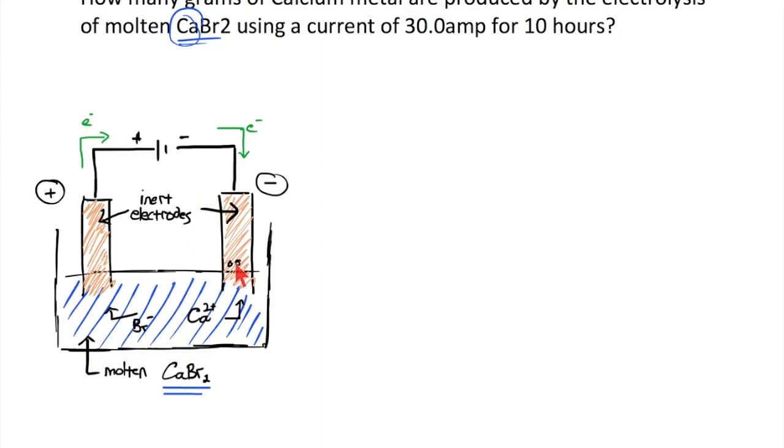you can have calcium ions with the positive two oxidation state start to migrate to the negative side. So we're going to have a deposit of calcium building up over here and also the bubbling up of bromine gas over here.